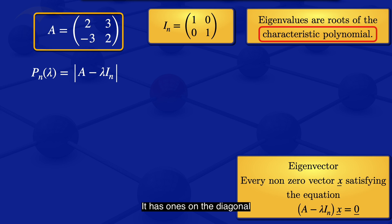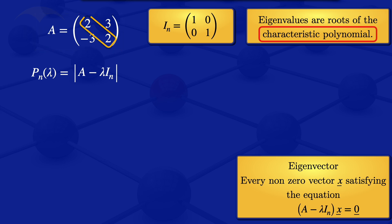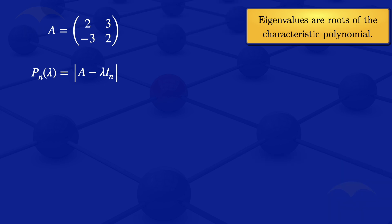The identity matrix has 1s on the diagonal, and in the formula we are multiplying that I_N by lambda. This will result in having lambda on the diagonal. So we are subtracting a matrix which has lambdas on the diagonal from the matrix A. What it results in is subtracting lambda from the diagonal elements. So when you subtract lambda from those 2 diagonal elements, what we will have is the determinant of the matrix: 2 minus lambda, 3, minus 3, 2 minus lambda.